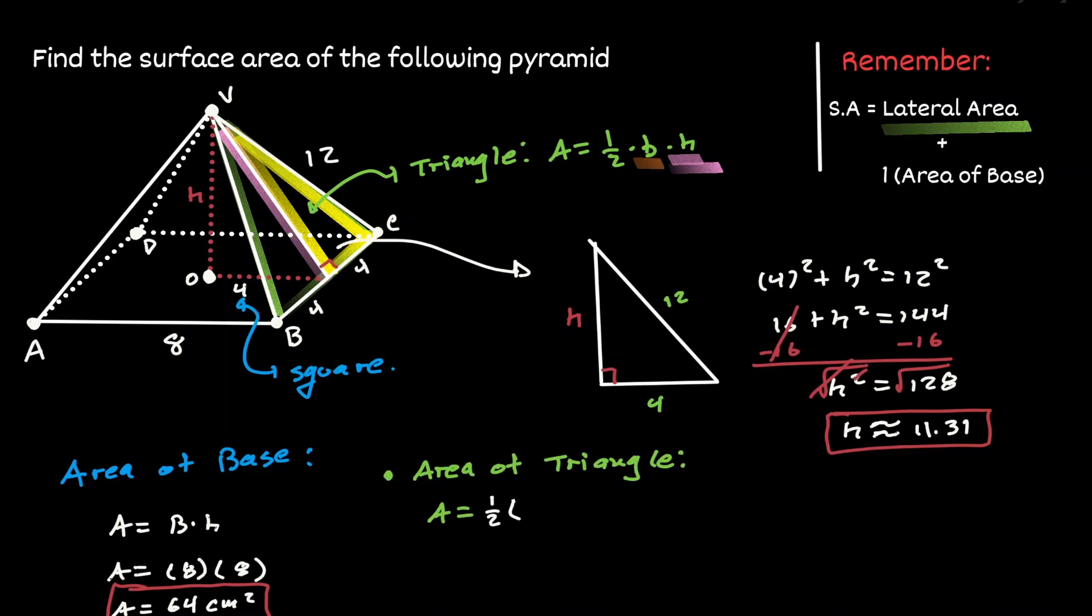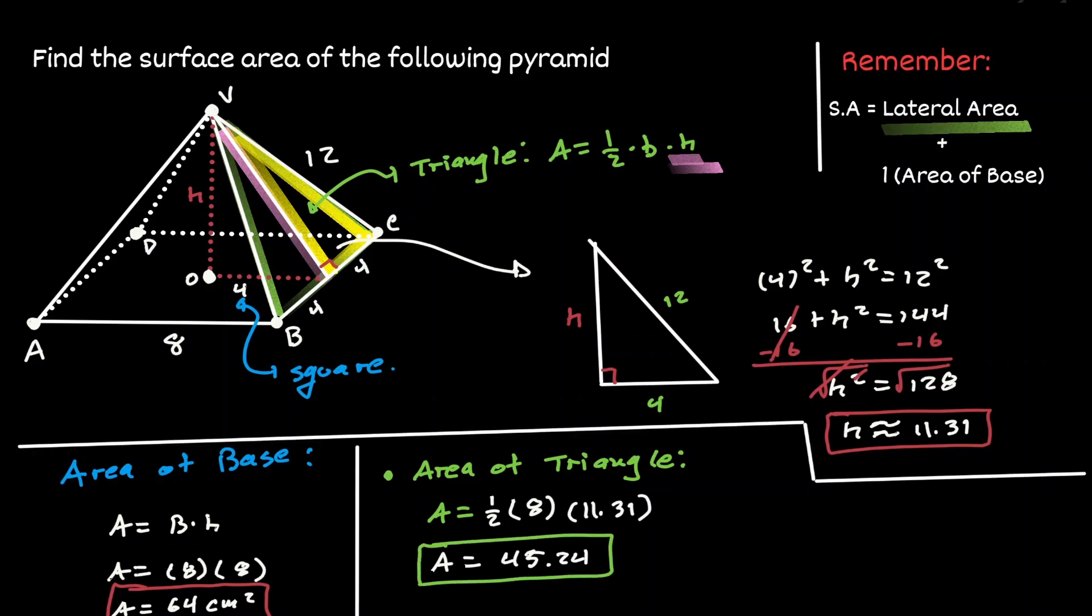That would be 1 half times the base, which we know is 8, times the height, which we found to be 11.31. And if we multiply all this, we're going to get a value of 45.24.